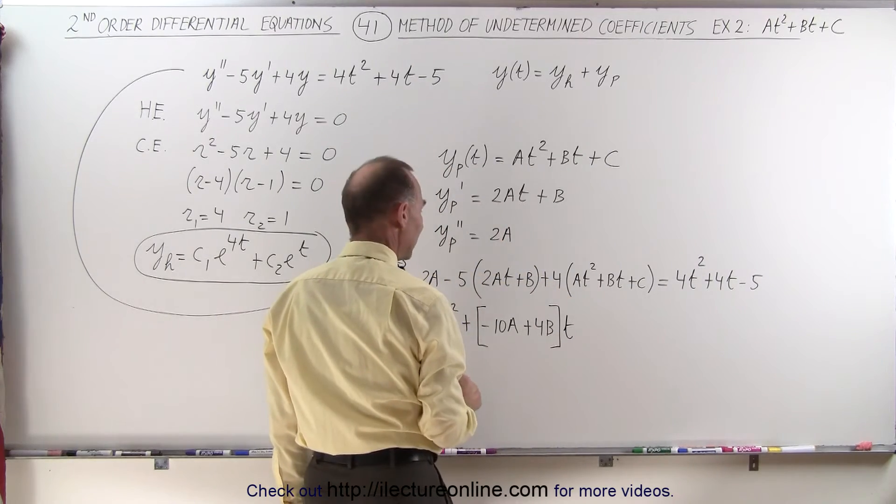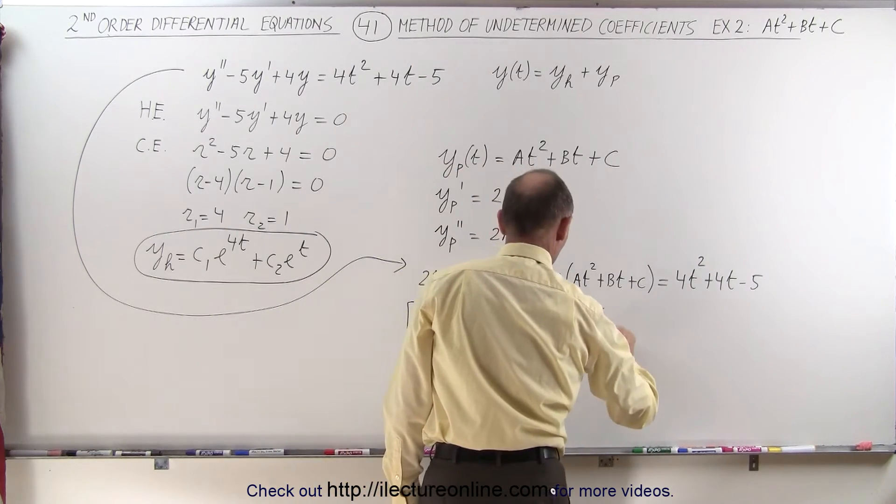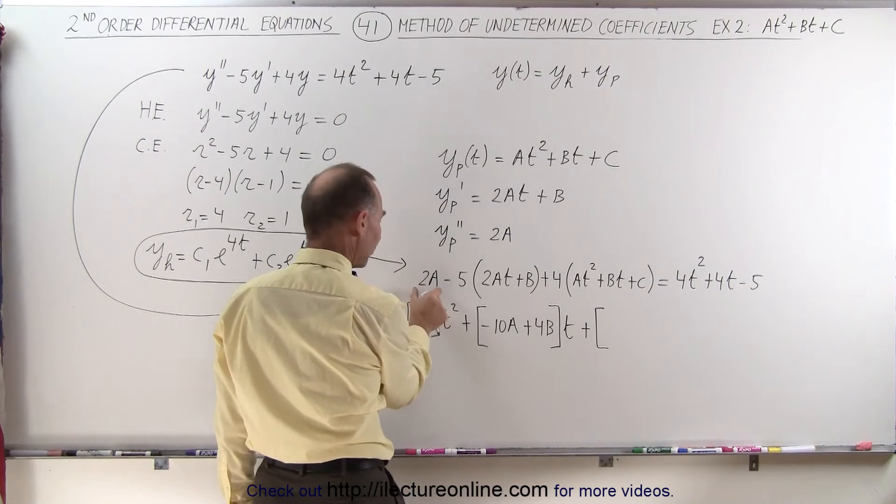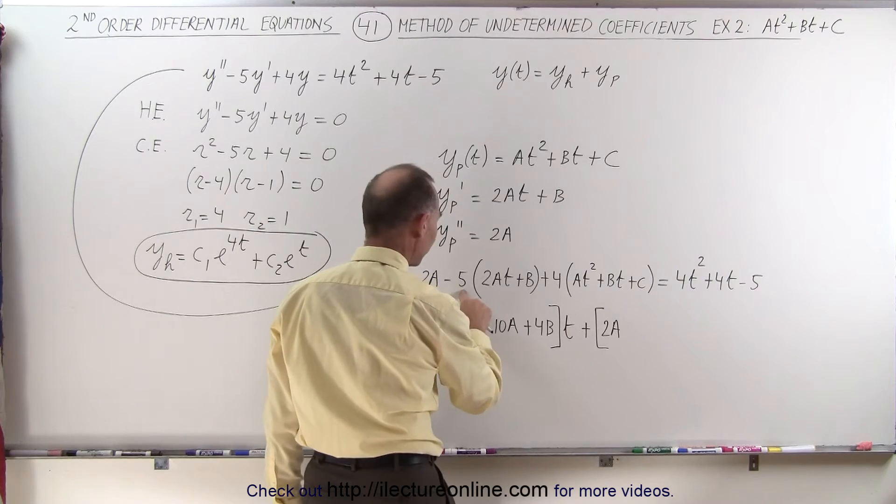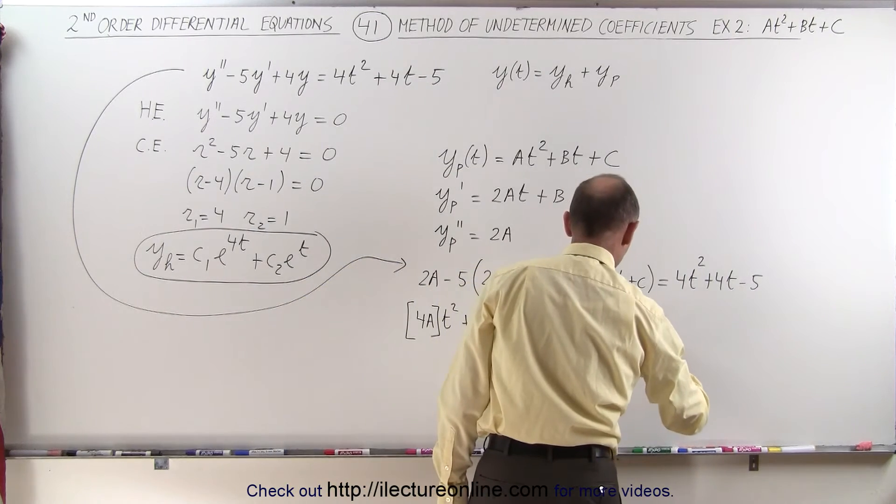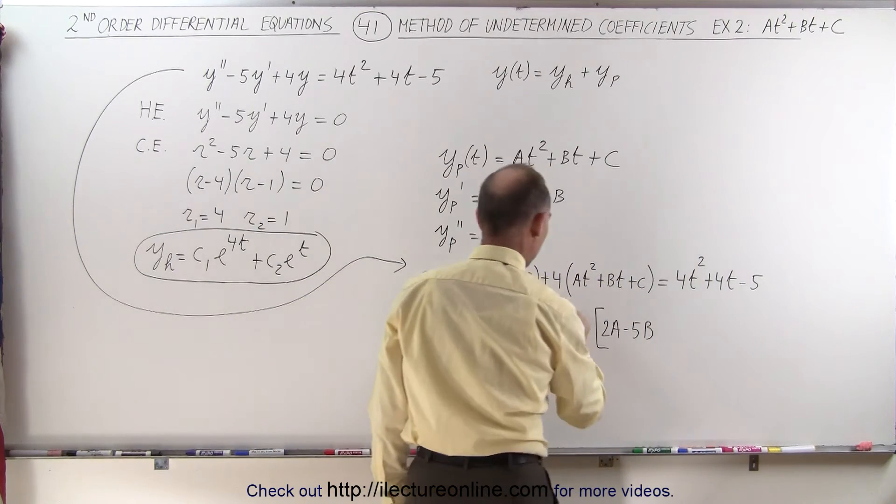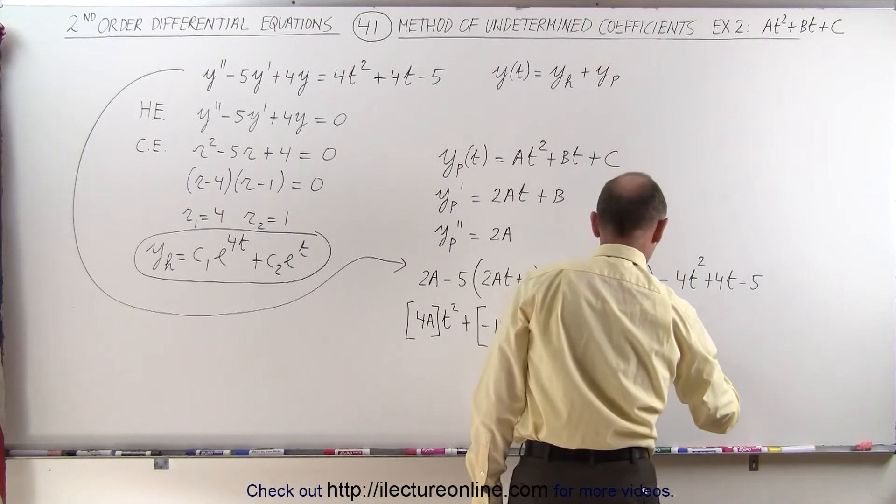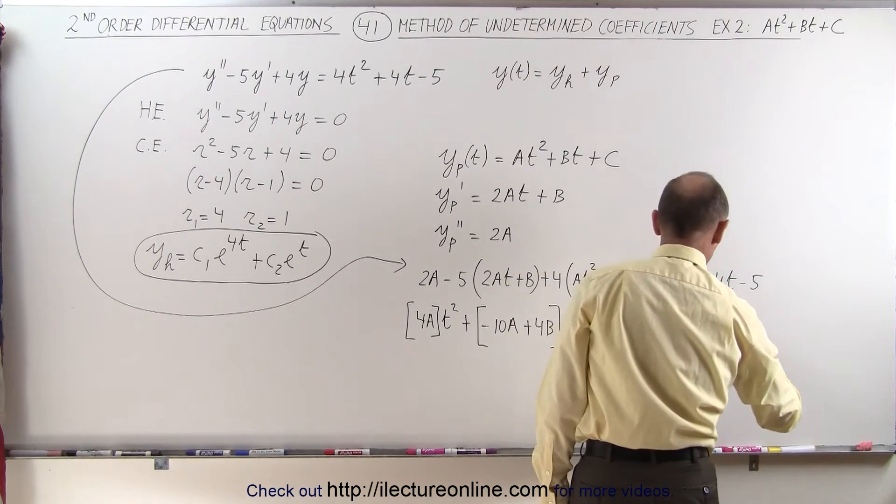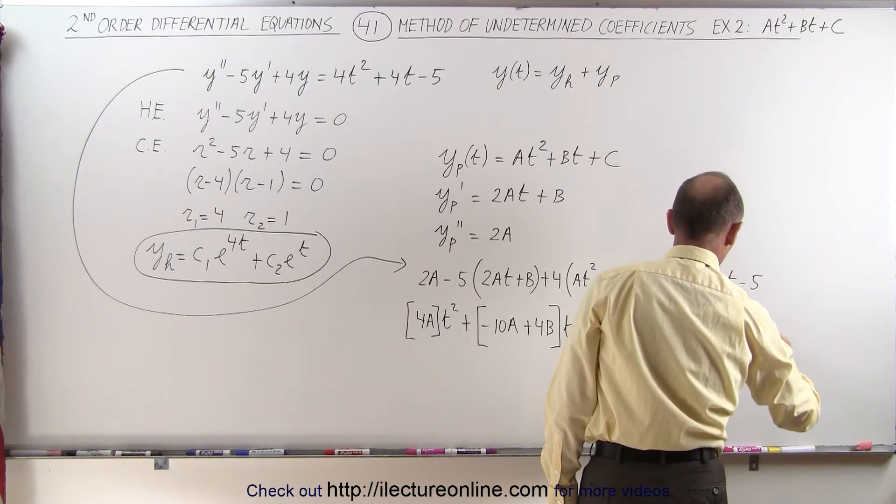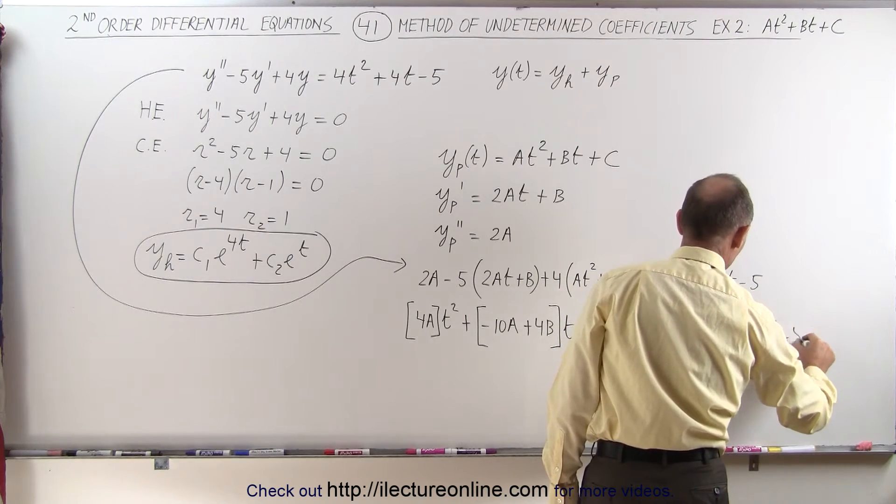And then finally, we have just a constant comprised of the remainder. So we have a 2a right here. And minus 5 times b, which is minus 5b. And over here, we have a 4 times c, so plus 4 times c. And that equals the right side equation 4t squared plus 4t minus 5.